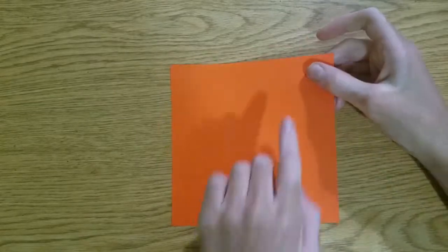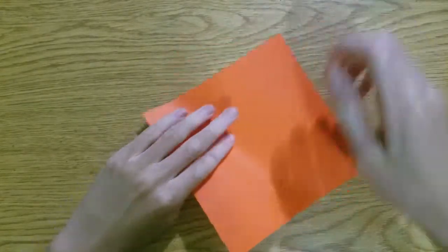First we're going to make a fish face. Start by folding both diagonals, color side up.